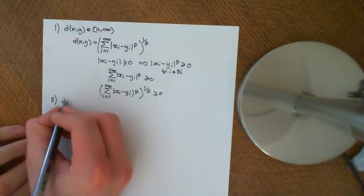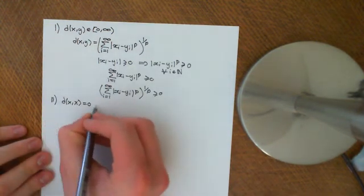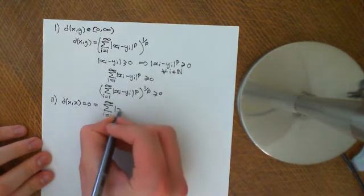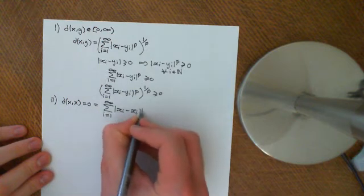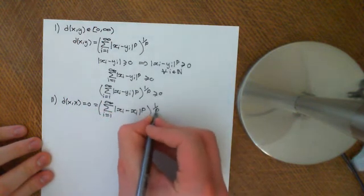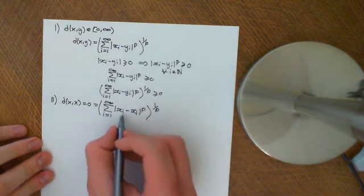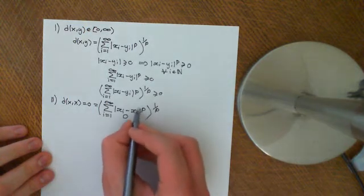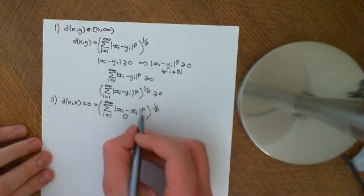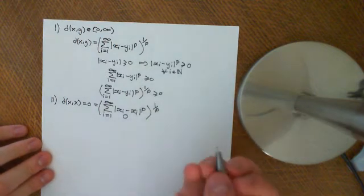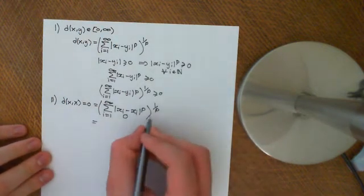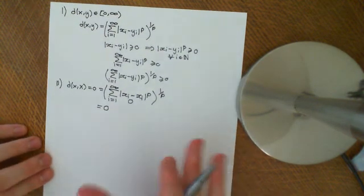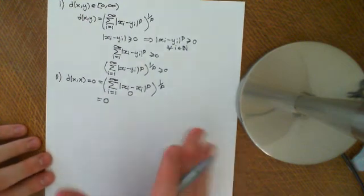Property 2: the distance between x and x needs to equal 0. By definition, this is the sum from i equals 1 to infinity of the modulus of xi minus xi to the power of p, all to the power of 1 over p. For every i, xi minus xi equals 0, so 0 to the power of p is 0, the sum of infinitely many zeros is 0, and 0 to the power of 1 over p is still 0. So the distance between a sequence and itself is 0.